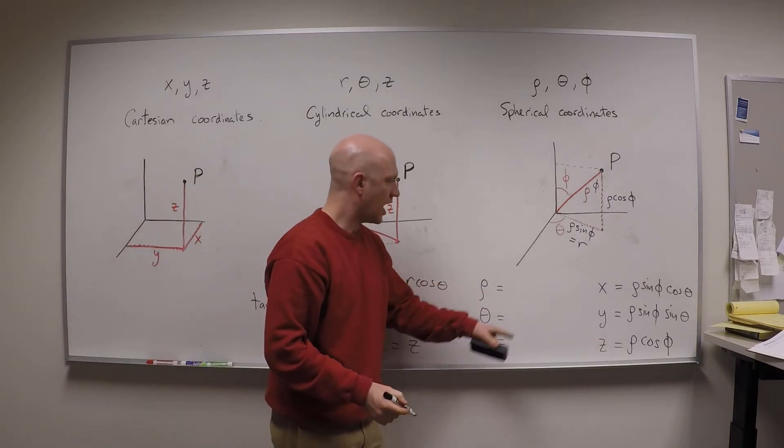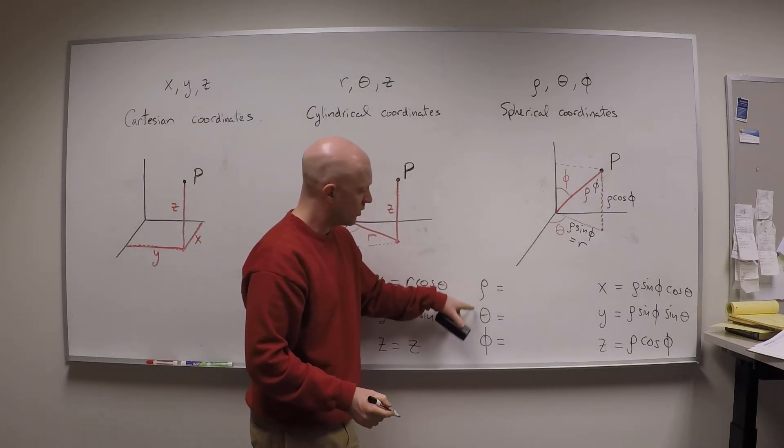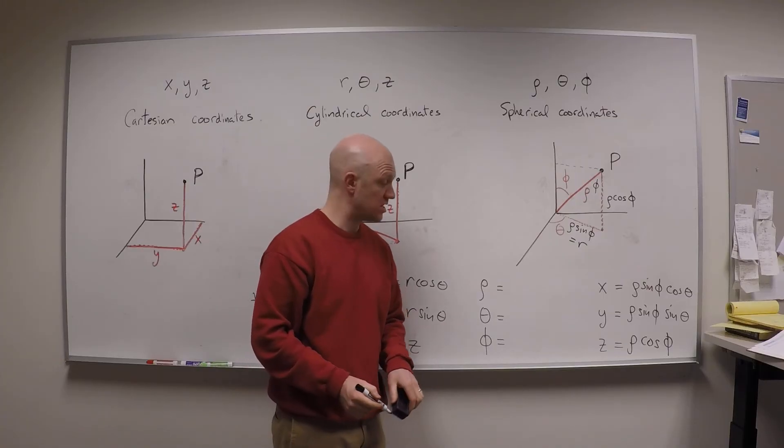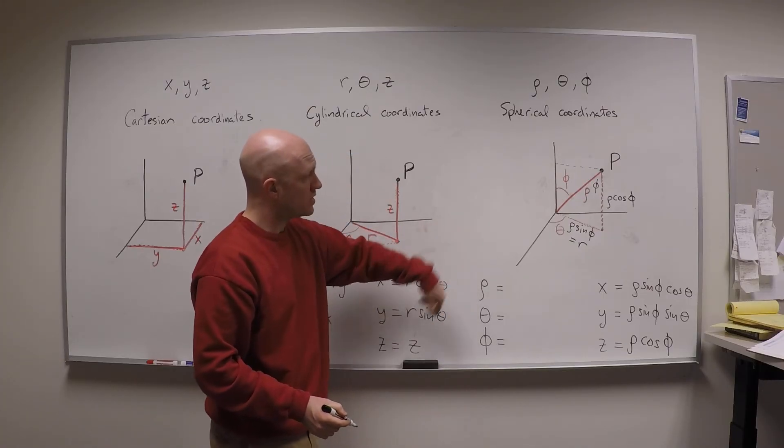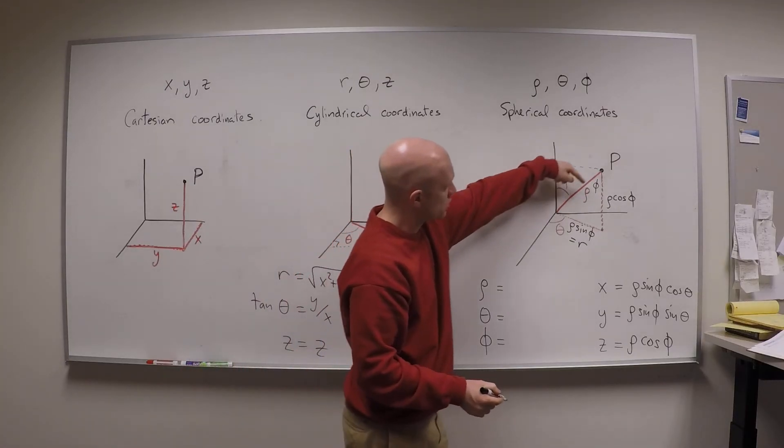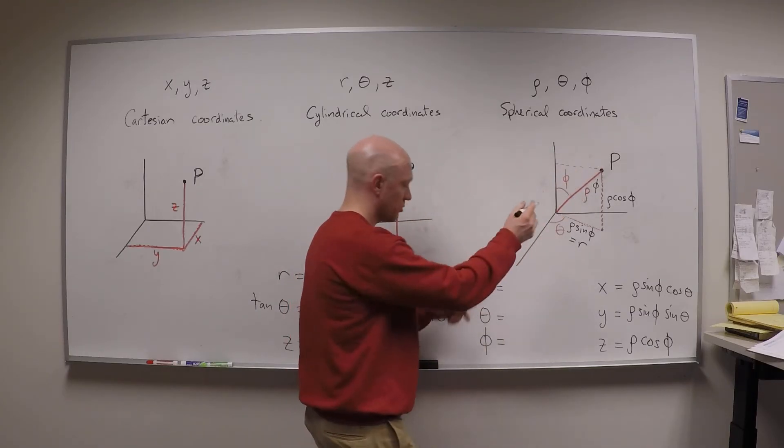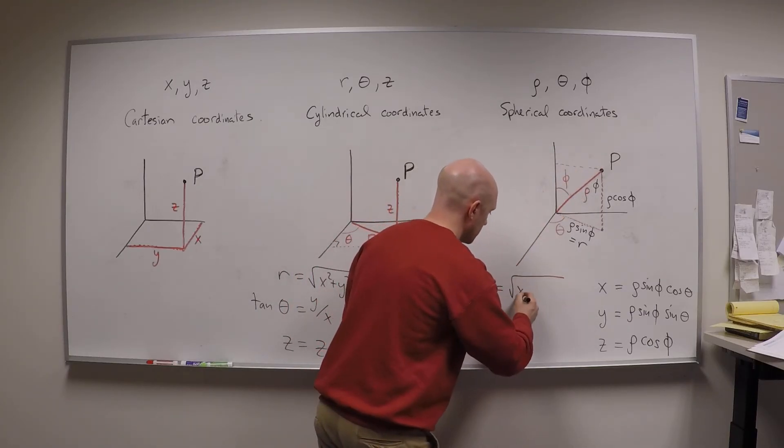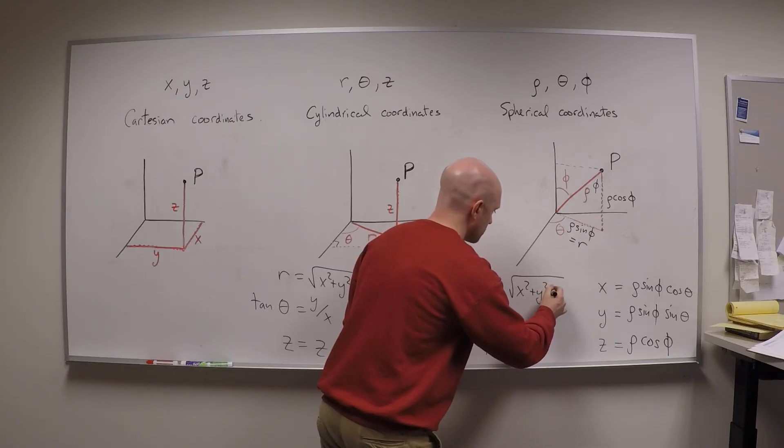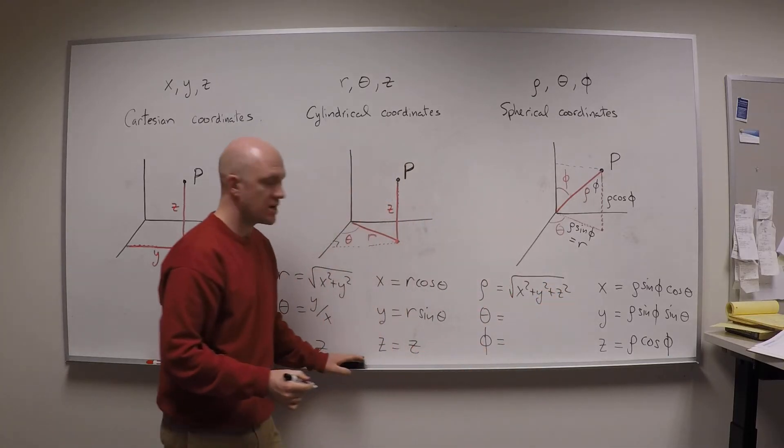So now let's say I know what x, y, and z are. How do I figure out what rho, theta, and phi are? Rho is probably the easiest one, because that's just the actual distance from the origin to the point. So it's going to be the square root of x squared plus y squared plus z squared.